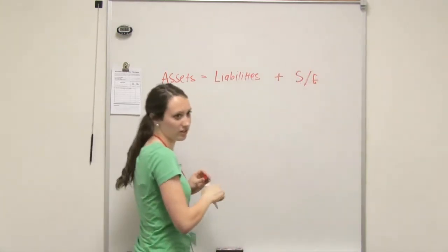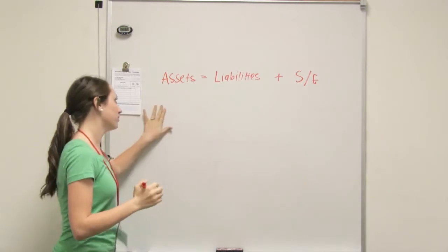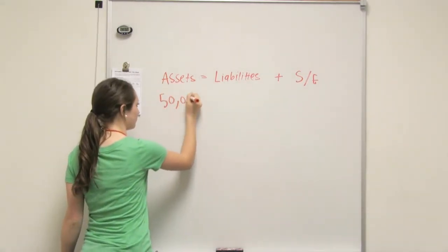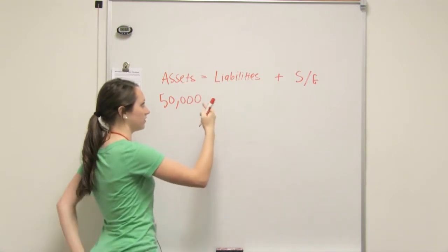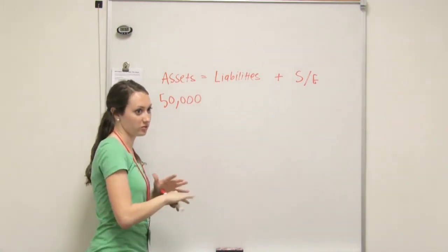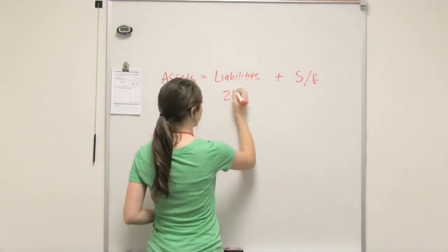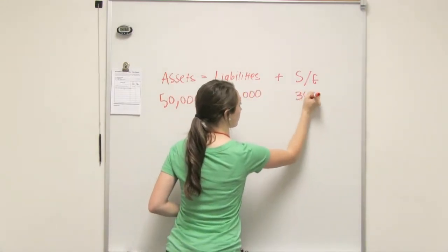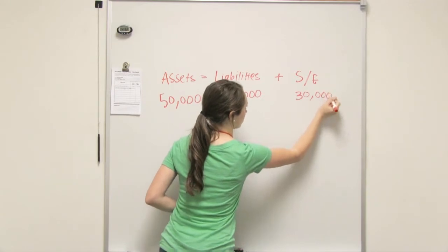And if I do stockholders equity like that, is that fine? Yeah, that's fine. Okay, so if we start with $50,000 in assets, then liabilities and stockholders equity have to equal $50,000 somehow. So we'll put $20,000 in liabilities and $30,000 in stockholders equity.